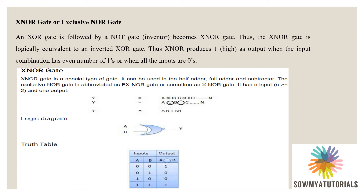The exclusive NOR gate is opposite to the exclusive OR gate. The exclusive OR gate followed by a NOT gate is called the exclusive NOR gate. The exclusive NOR is logically equivalent to an inverted exclusive OR. Exclusive NOR produces 1 as output when the input combinations are even numbers. In the truth table: when both inputs are the same, the result is true; when both inputs are different, the result is false.